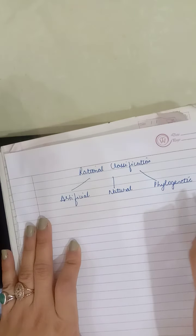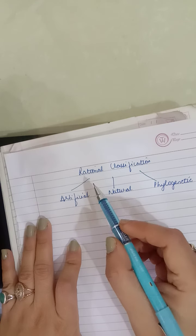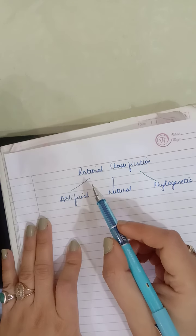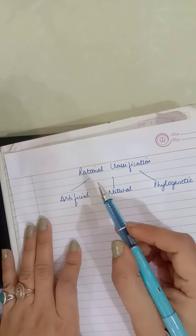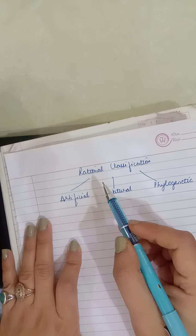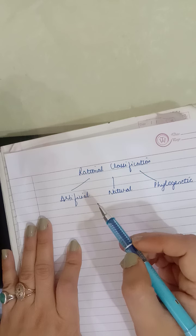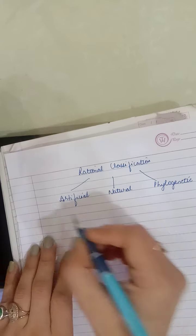We are discussing the types of types. You will remember that the rational system of classification is based on the actual nature and morphology of the plant, animal, or organism. But in empirical classification, organisms were only alphabetically grouped.